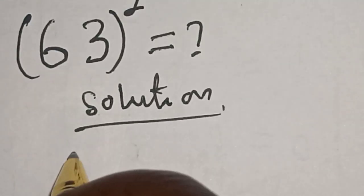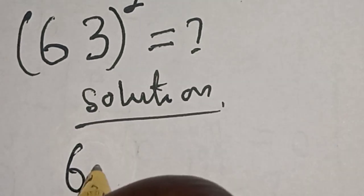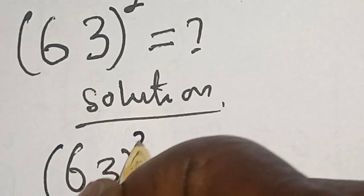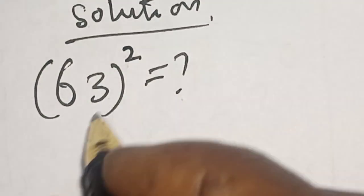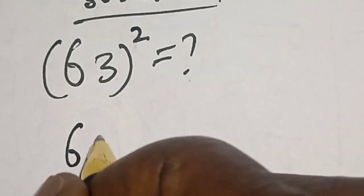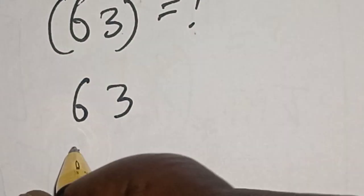We have the given question: 63 squared is equal to what? Generally we know that 63 squared is 63 multiplied by 63.